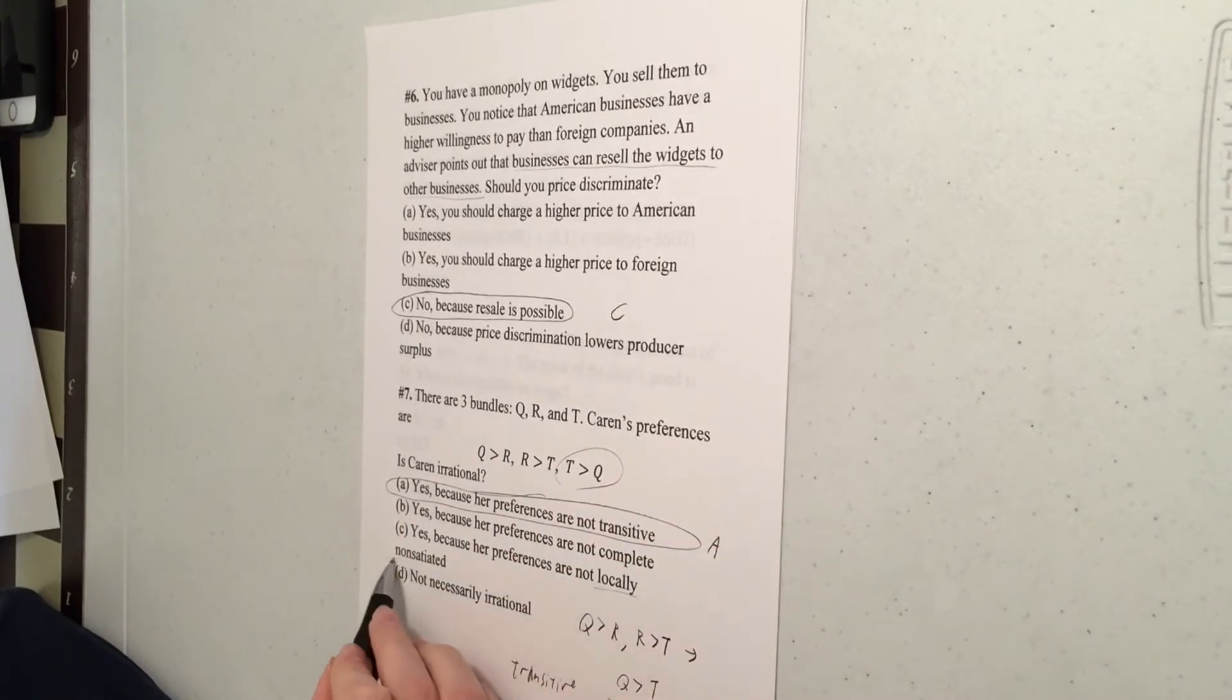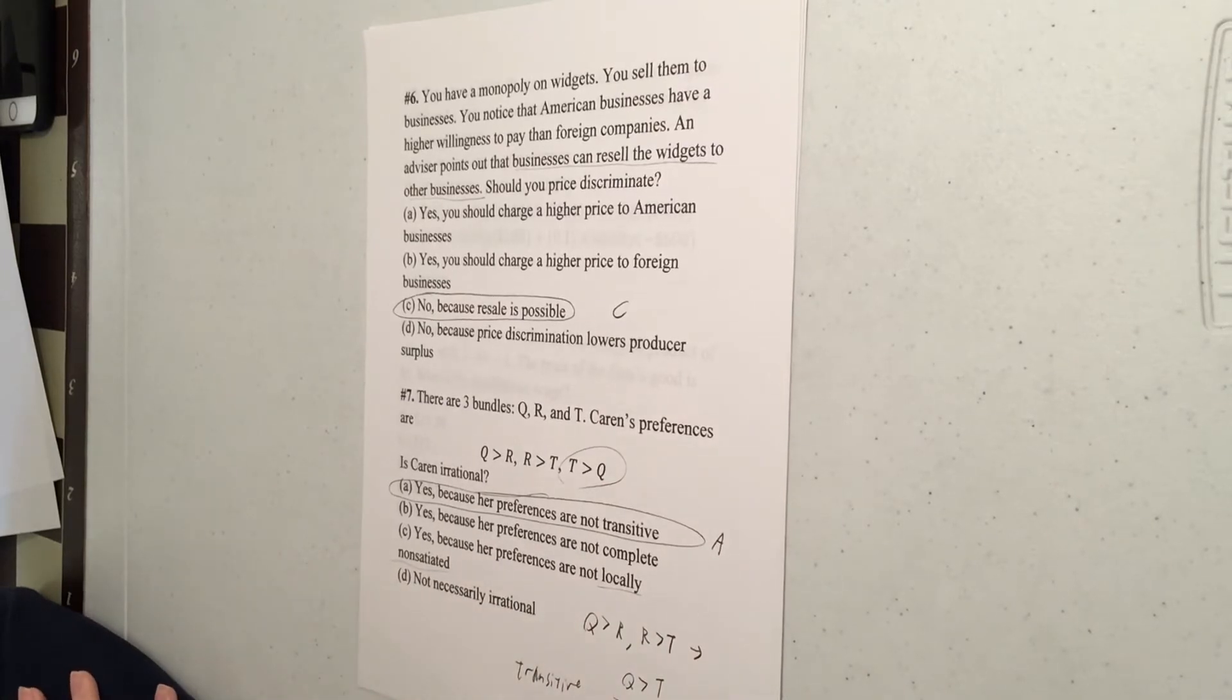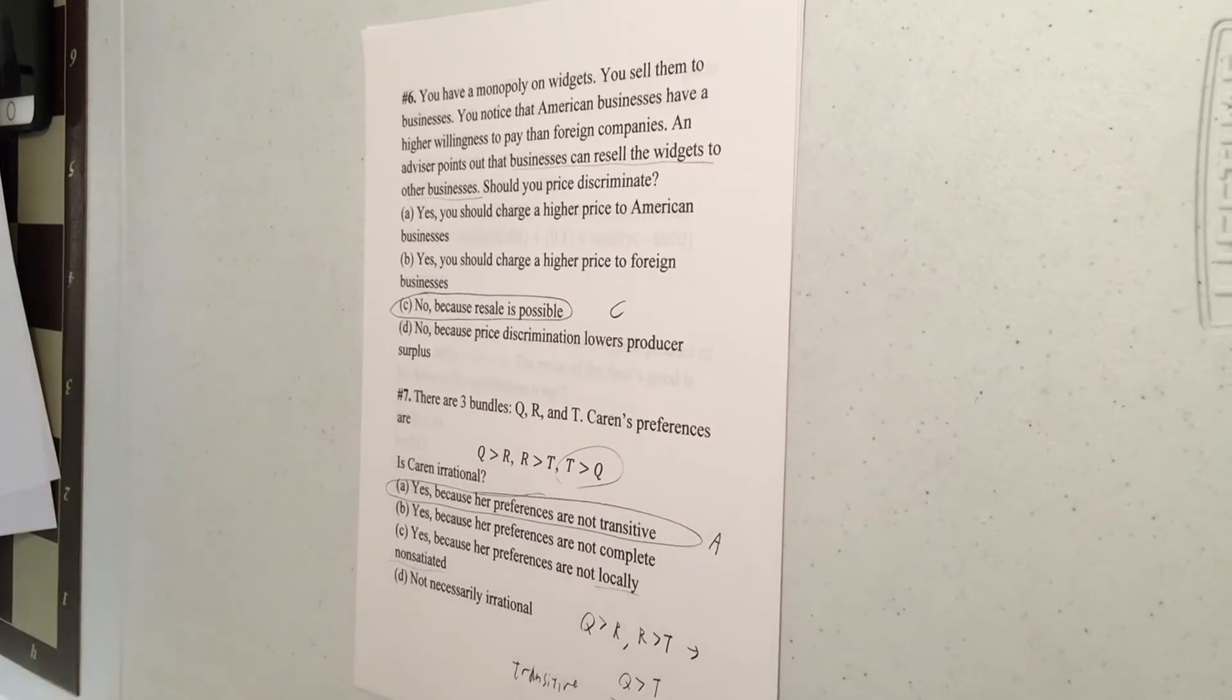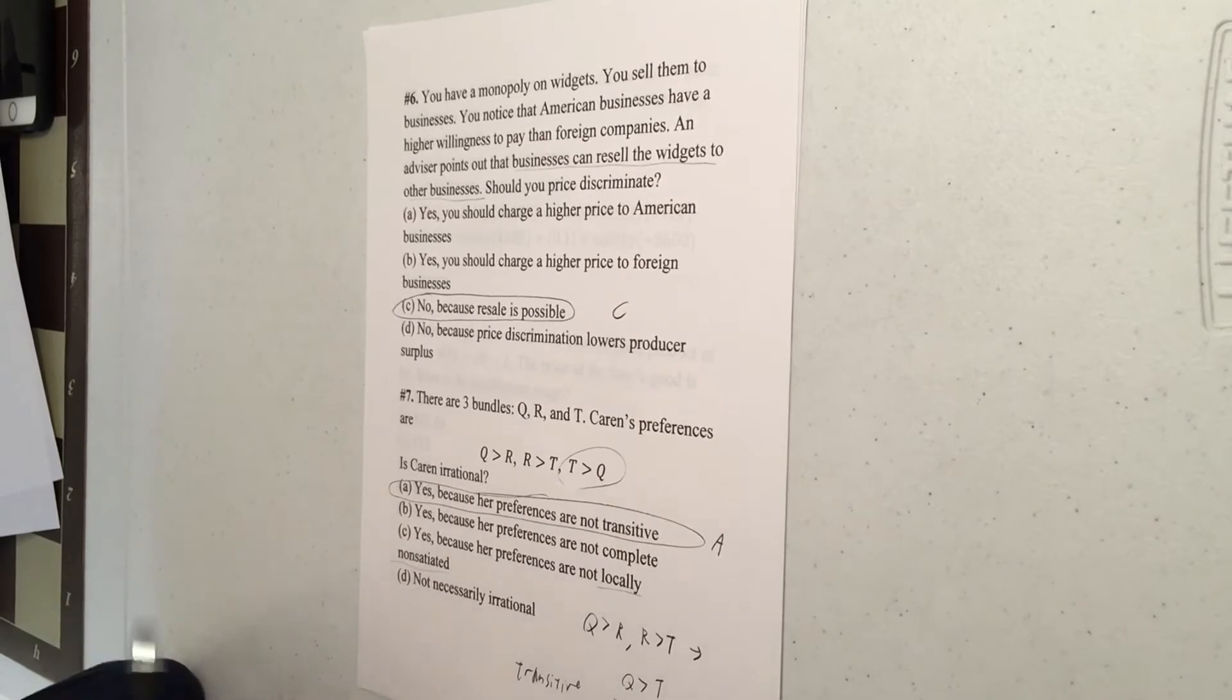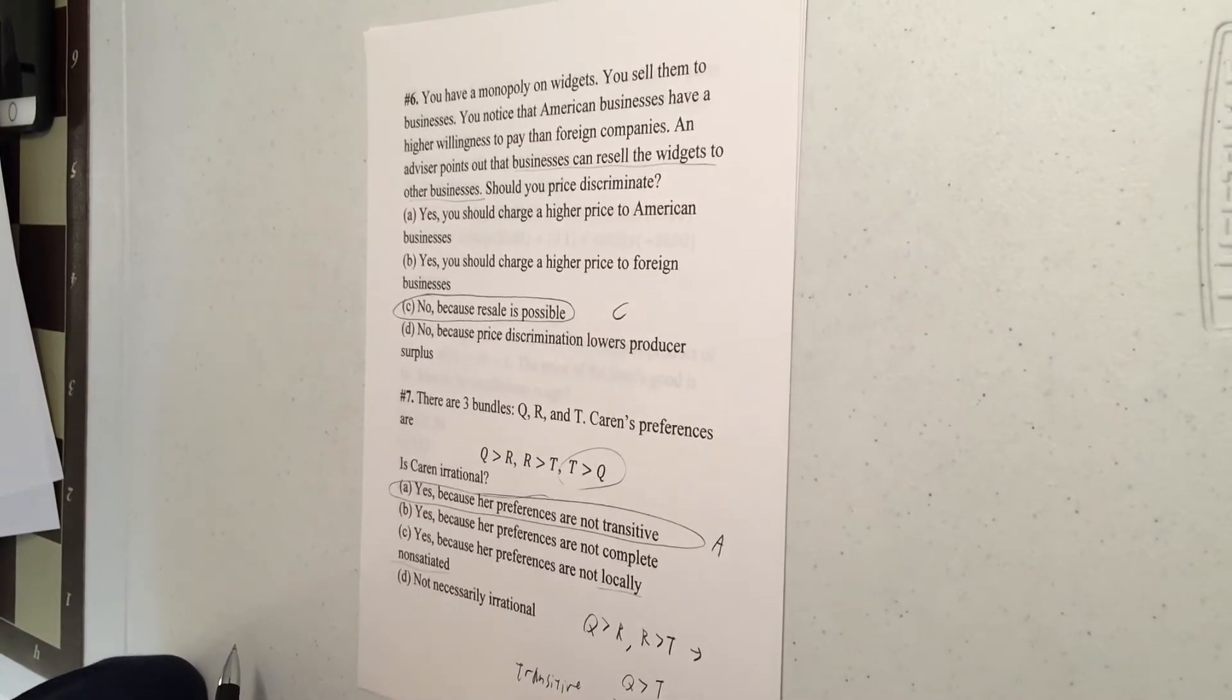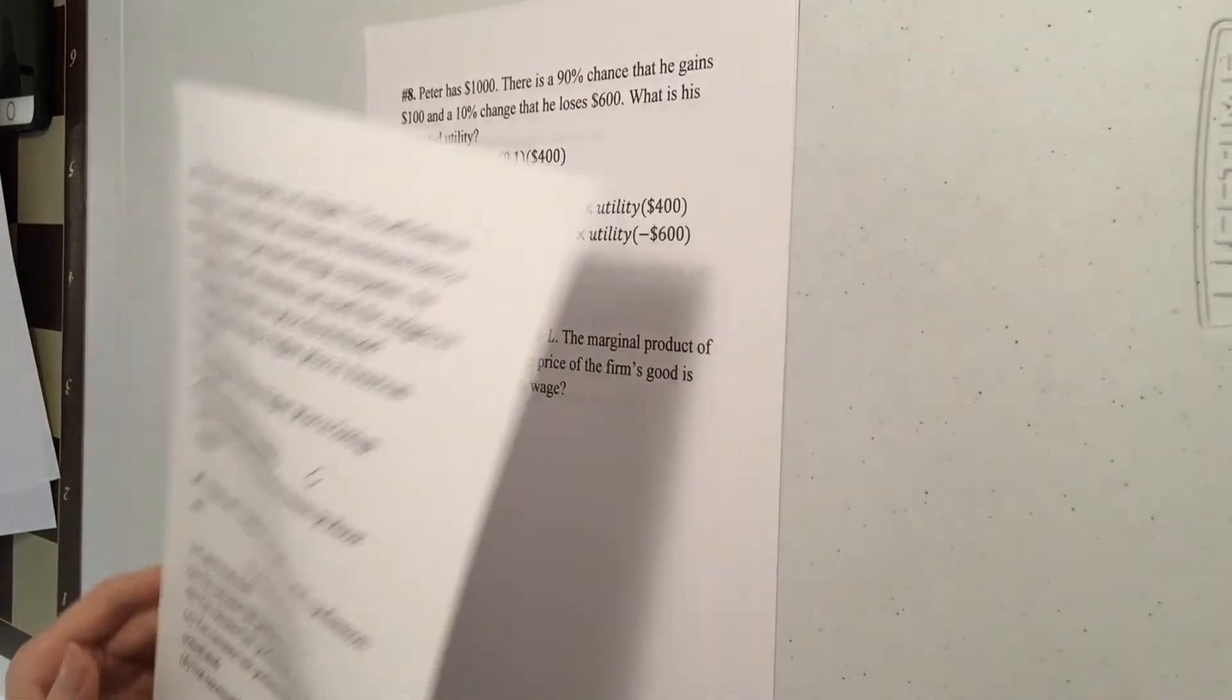Now I got to check are Karen's preferences transitive. So transitive says if we have Q better than R, let's say Q preferred to R, and R preferred to T, what that implies is Q preferred to T. But Karen's saying she thinks T is preferred to Q. So Karen's preferences are not transitive and therefore not rational. Now, local non-satiation here, that is a separate assumption. Local non-satiation is not part of rationality. We use local non-satiation in our result that rationality plus this extra assumption plus local non-satiation gives you the law of demand with some exceptions.